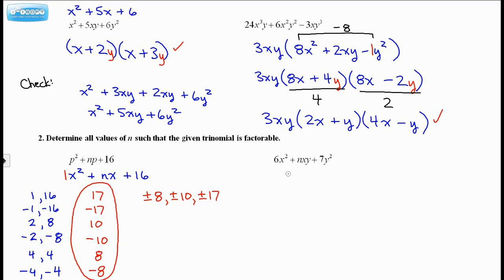Same question. Well, let's look for a GCF, and there isn't one. So in order for this to be factorable, we need two numbers that multiply to 42, but add to whatever n is. So to determine all the possible values of n, such that this is factorable, we just need to look at all the possible combinations of numbers that multiply to 42, just like we did with 16.